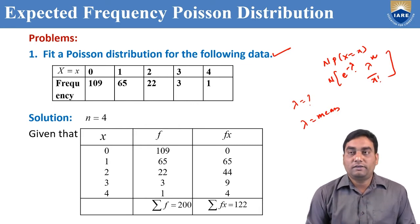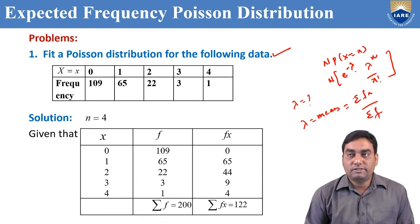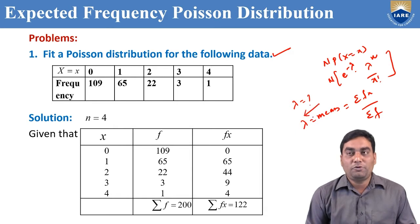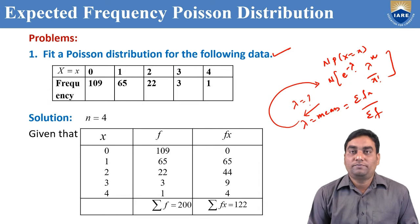If you compute Σfx / Σf, we get the mean. That mean equals lambda in Poisson Distribution. After getting lambda, we can use the expected frequency formula.